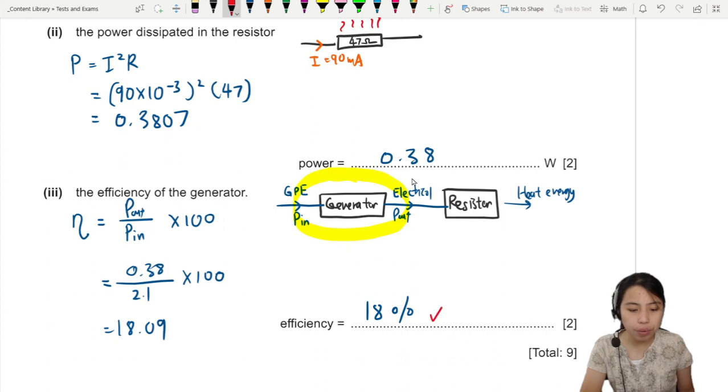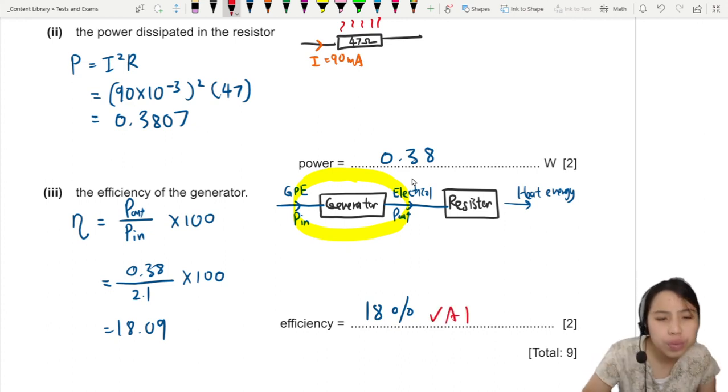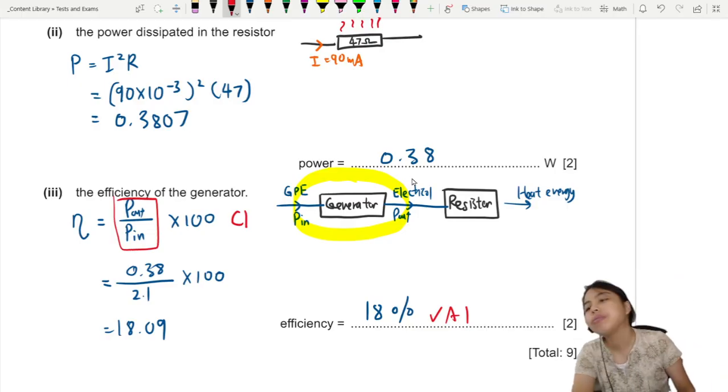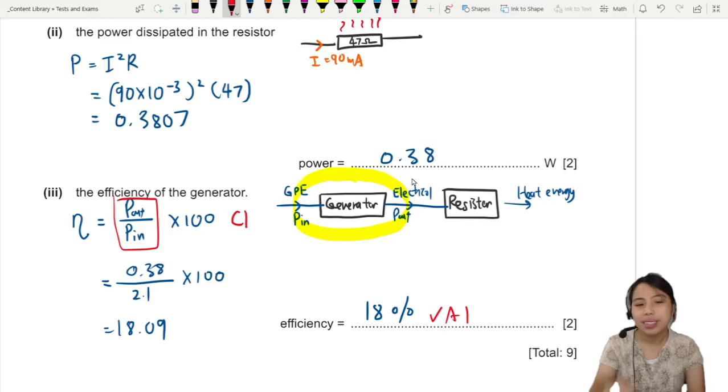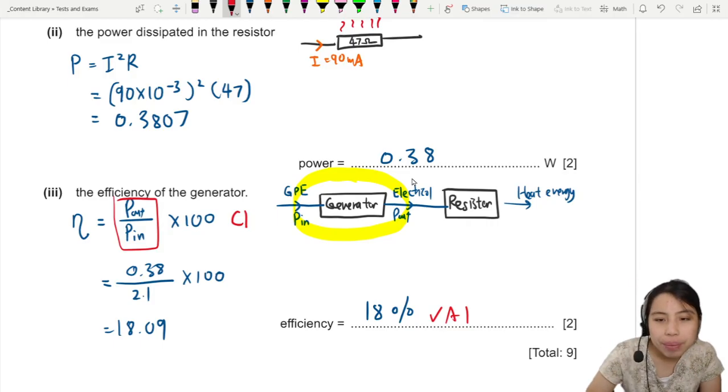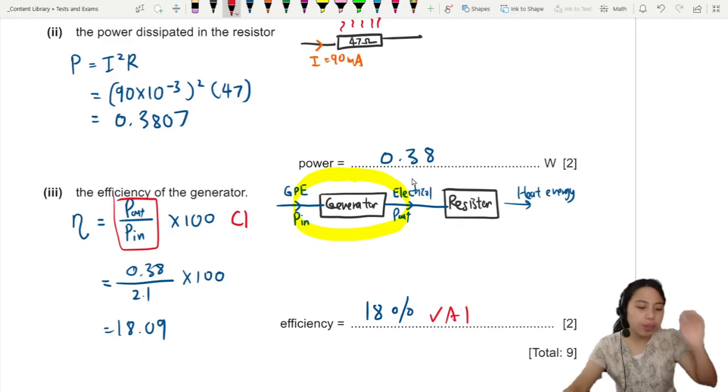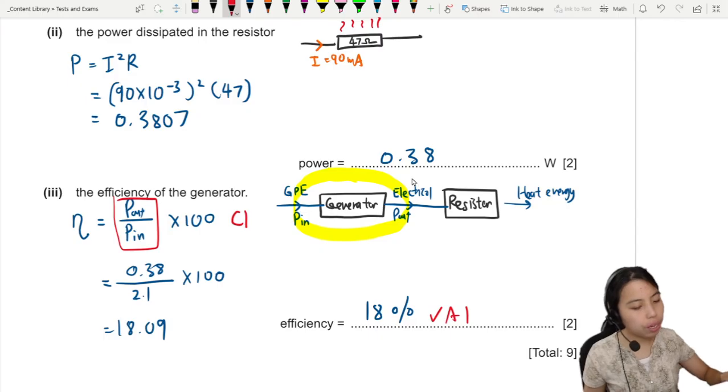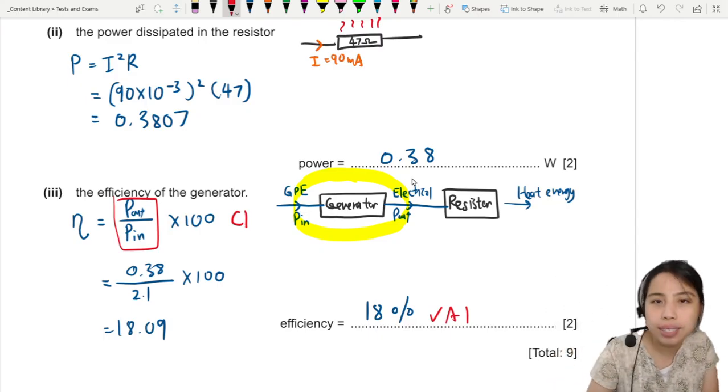Right, so one mark is for the final answer. One mark is for the equation of efficiency, especially power out over power in. It's a ratio. Okay, I think that's all. Okay, yeah, so that's all for this question of energies. How do you calculate power and energy? How do I take one?